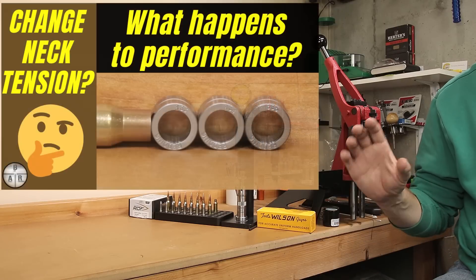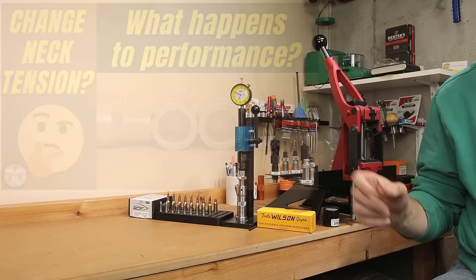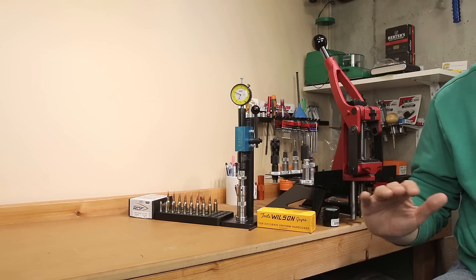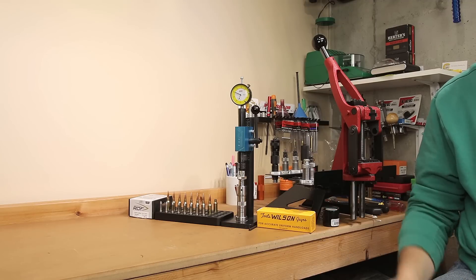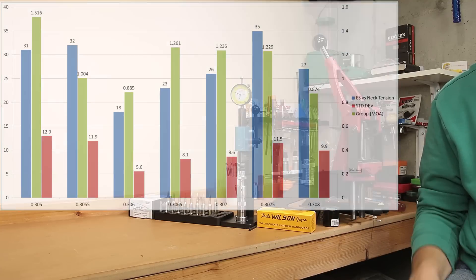In last week's video, we looked into how neck tension actually affected the performance of our reloads in both group size as well as statistics. Overall, the average velocity seemed to not be greatly affected by neck tension, but the standard deviation and extreme spread certainly seemed to be.